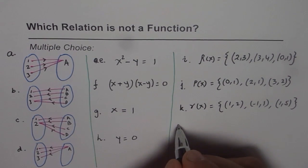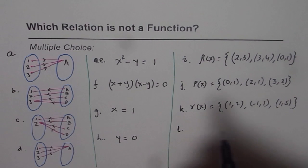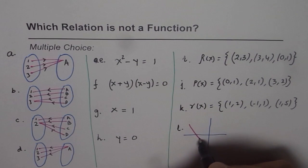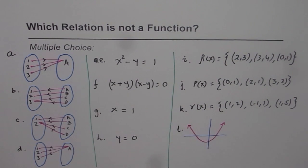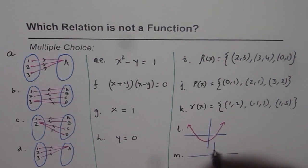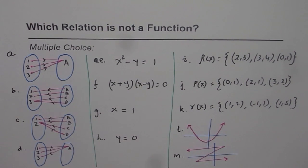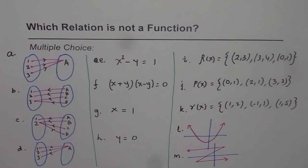Now I'll give you some graphs. Let me sketch graph L for you — the graph looks like this. And then we have graph M, which looks like this. So we have different types of relations here: mapping diagrams, equations, coordinate sets, and graphs. From all of these, you have to figure out which relations are not functions.